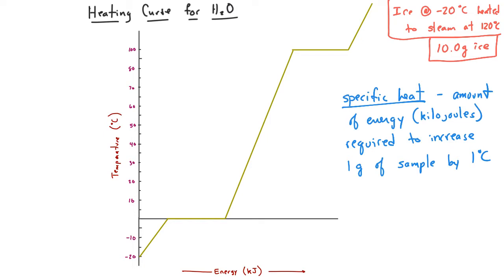First, specific heat. This is the amount of energy in kilojoules that is required to increase one gram of a sample — in this case water — by one degree Celsius.